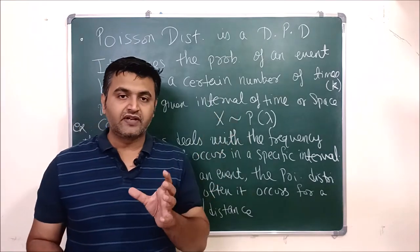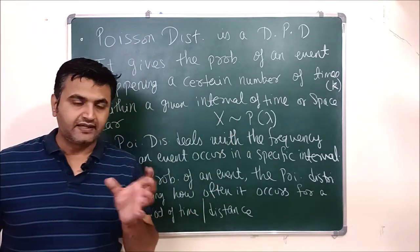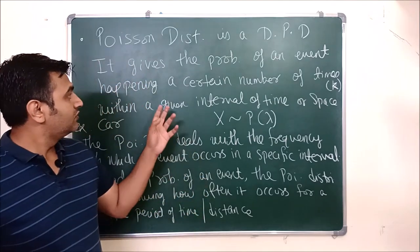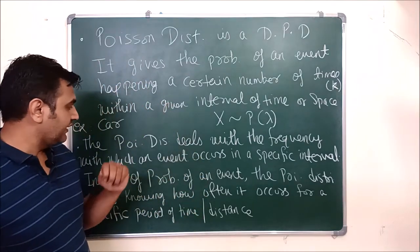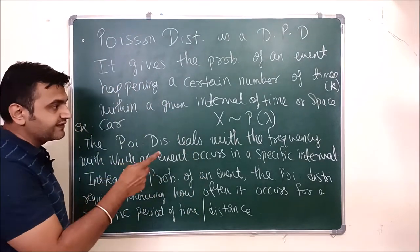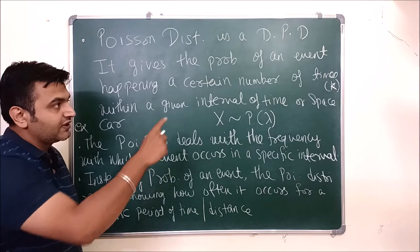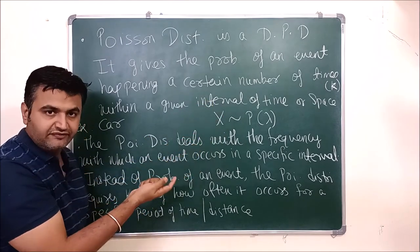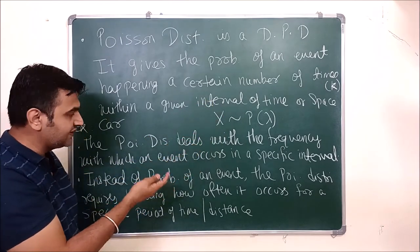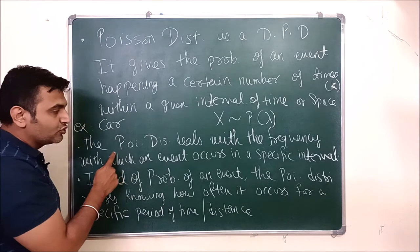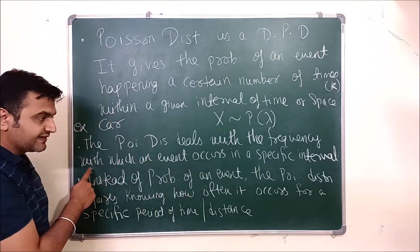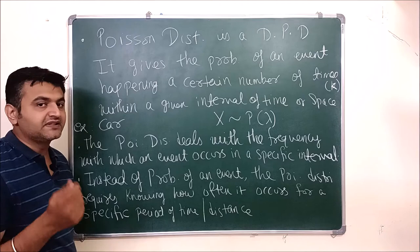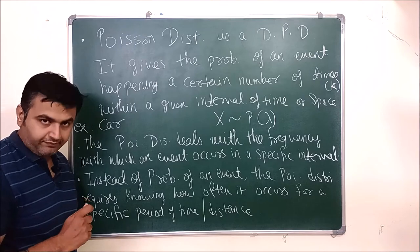Here the interval of time is 9 AM to 10 AM. Another way to say it: Poisson distribution deals with the frequency — the number of times — with which an event occurs in a specific interval of time.